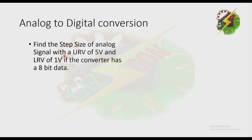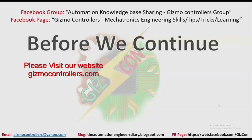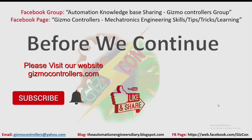Find the step size of an analog signal with a URV of 5 volts and LRV of 1 volt, if the converter has 8-bit data. Please pause this video and try to solve it by yourself.